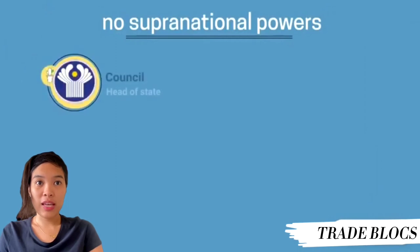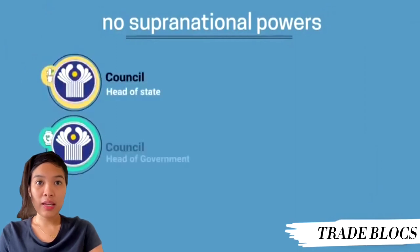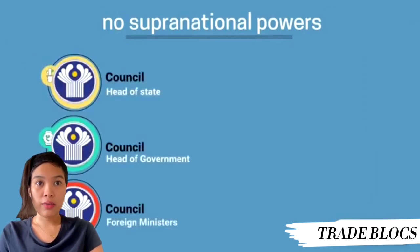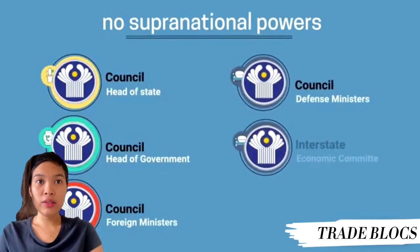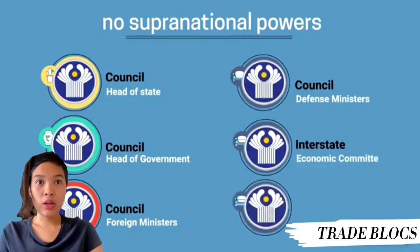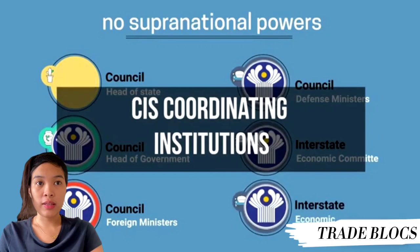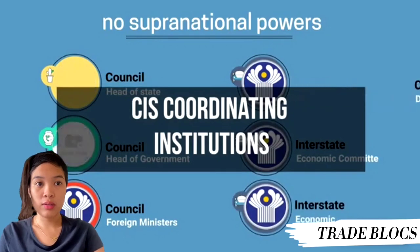The Council Head of State, the Council Head of Government, the Councils of Foreign Ministers, Defense Ministers, the Interstate Economic Committee, and the Economic Union are CIS coordinating institutions.